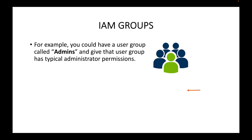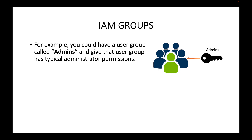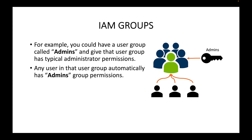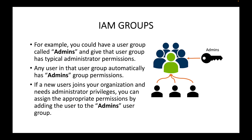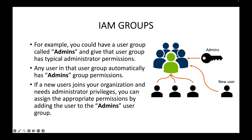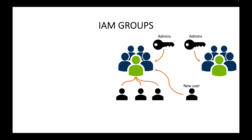For example, let's say you have a user group called 'admins'. This user group typically has administrator permissions — they can do almost anything on the AWS platform. Any user that belongs to this admins group will automatically get all those permissions. All we have to do is add users to the group. If any new user joins your organization and needs administrator permissions, you can assign them by simply adding that user to the admin user group.